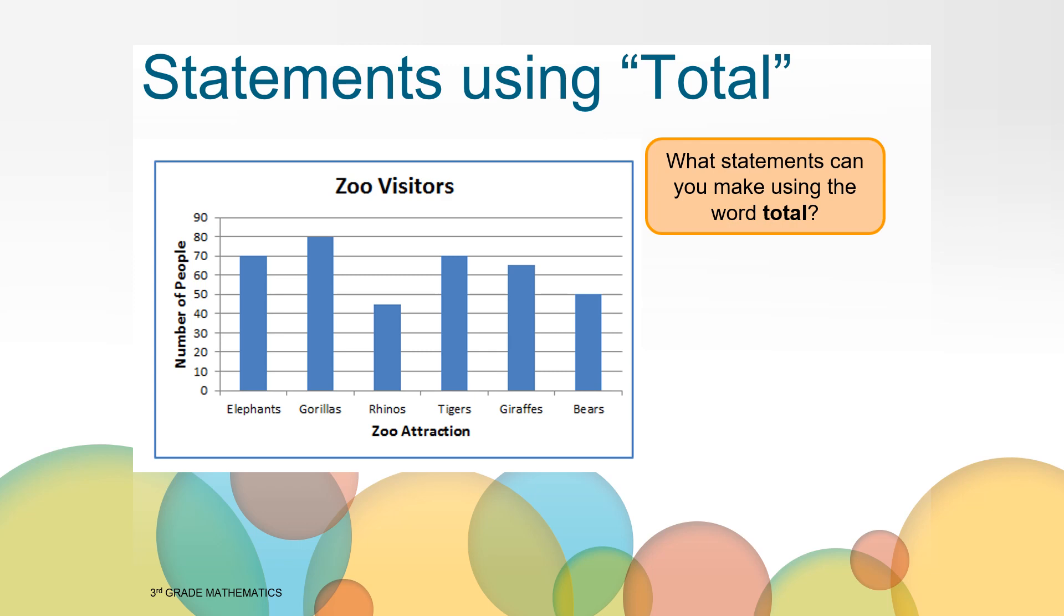Can you come up with a statement that uses the word total using the data from the bar graph? Take a moment and write down the statement that you come up with. Here is a sentence frame that may help you out. A total of blank people visited the zoo. What do you need to do to complete the statement? Yes, you need to add the number of people that visited each animal. Take a moment and solve this in any way that makes sense to you.